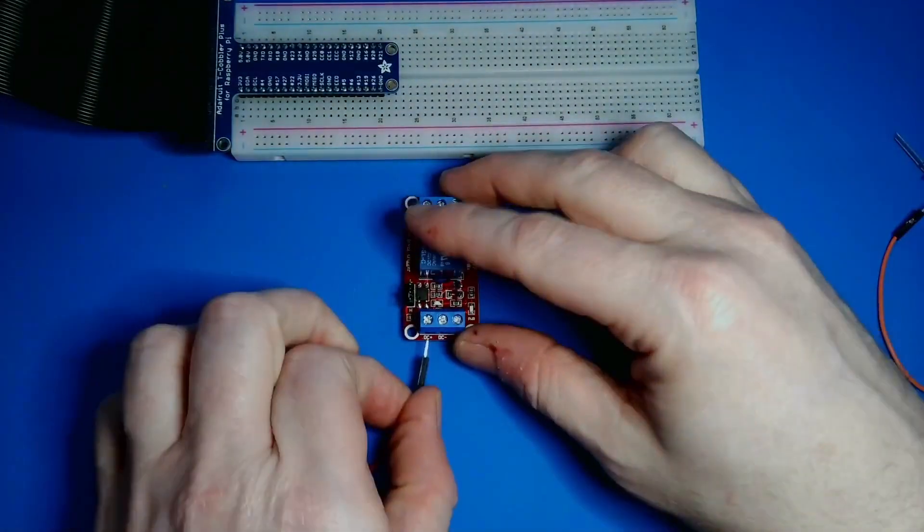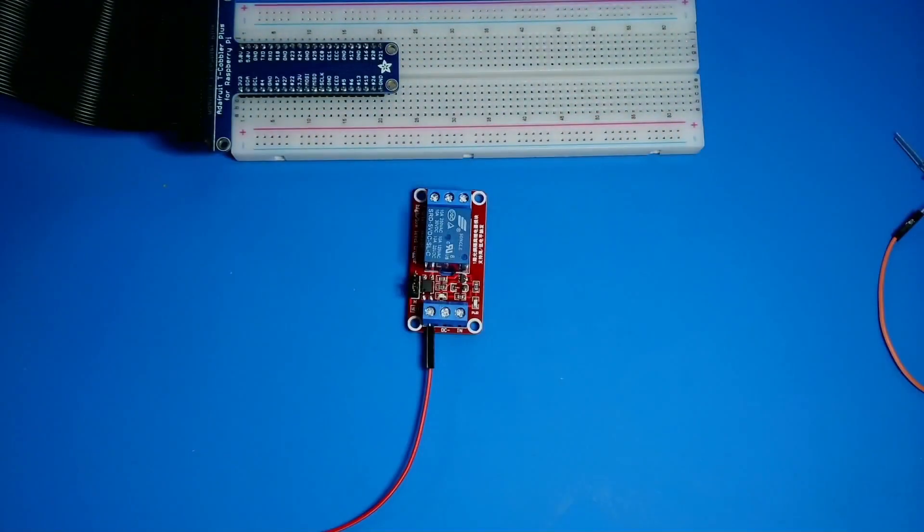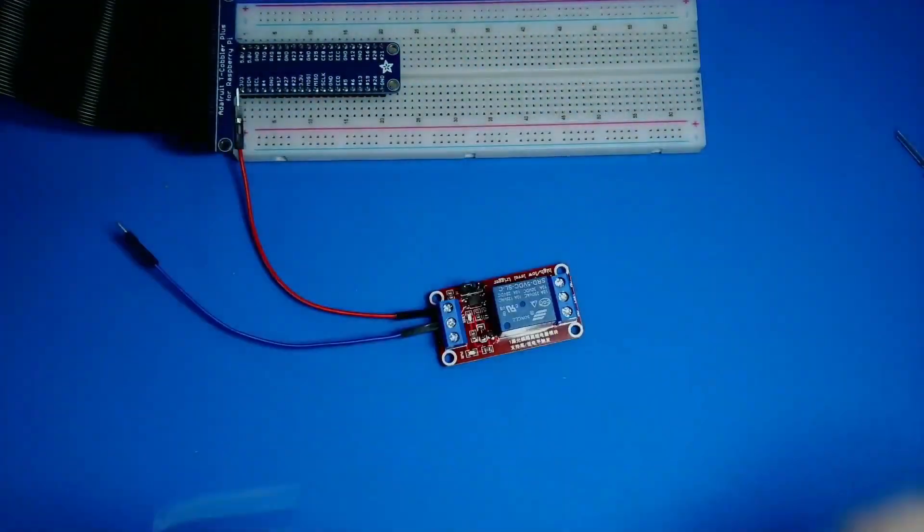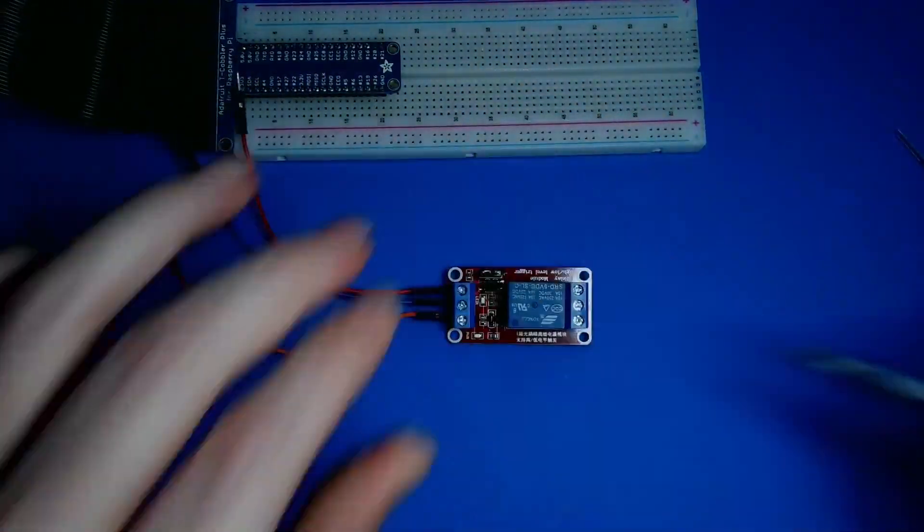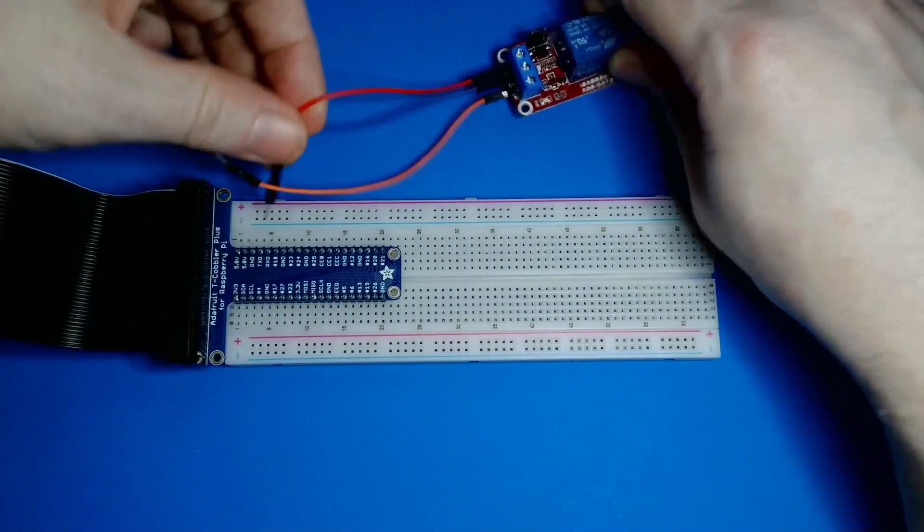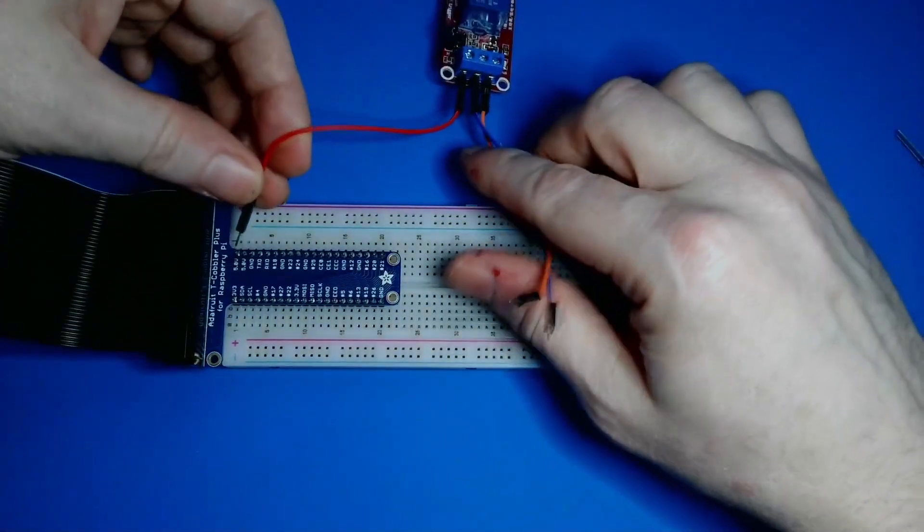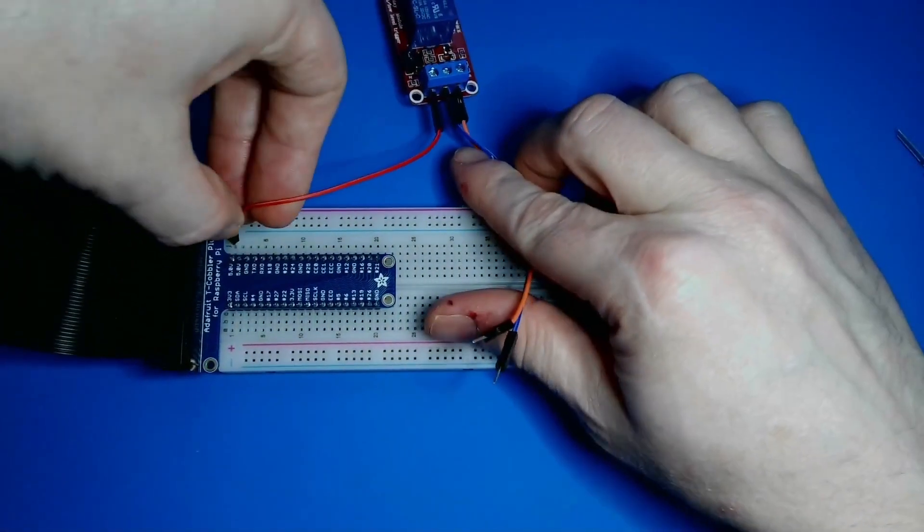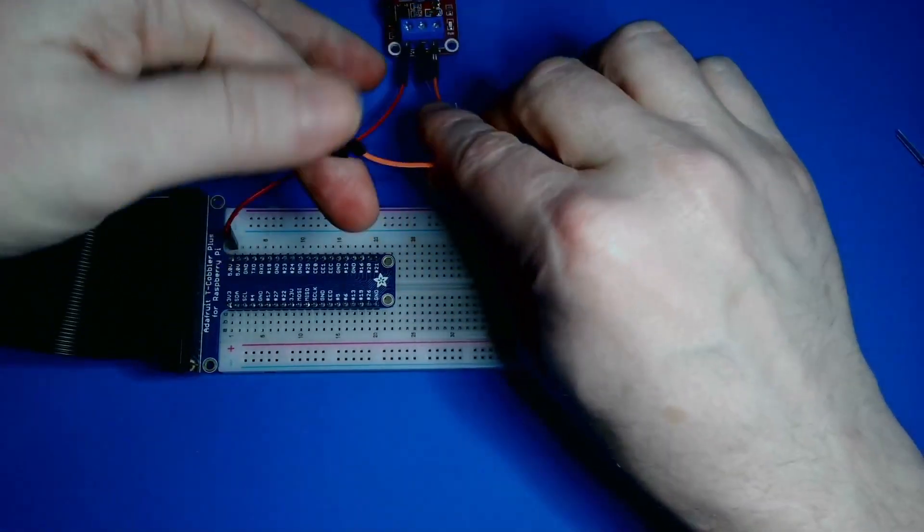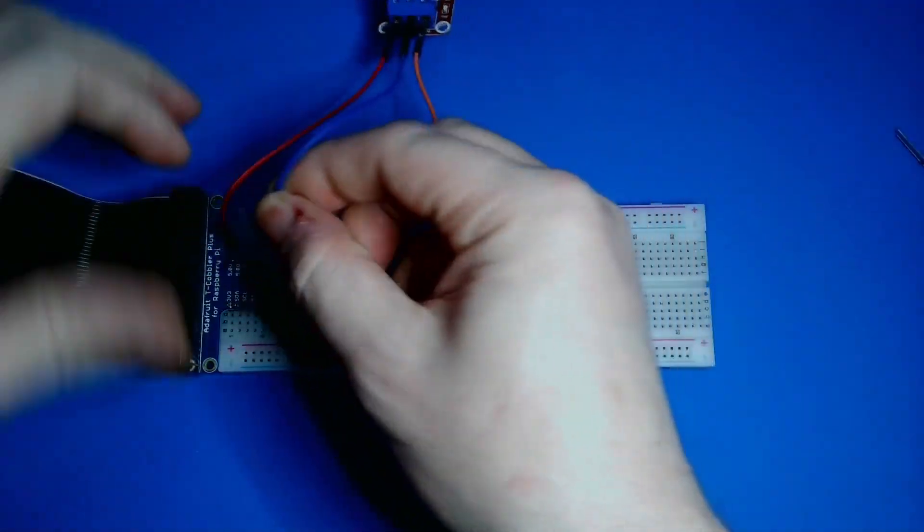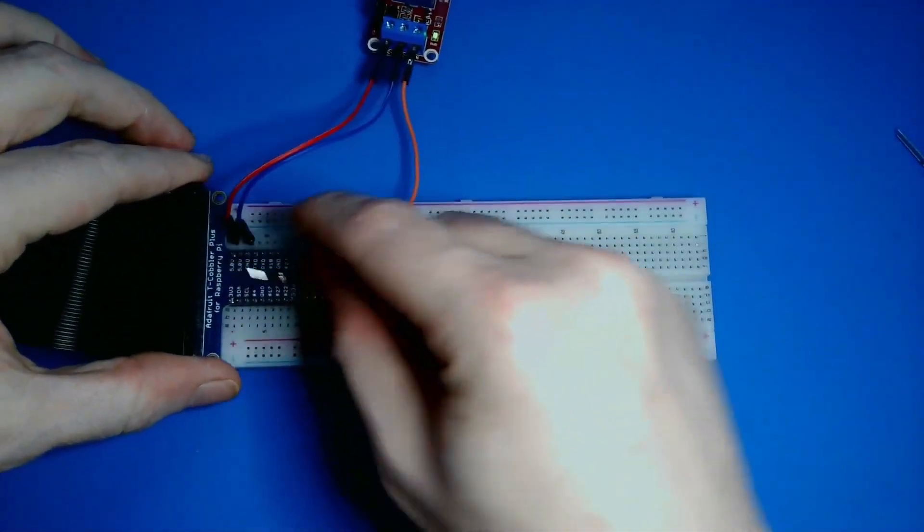To use the relay, I'll first connect jumper wires to the screw terminals on the control end of the relay. I've cleared my breadboard, and now I'll connect the DC positive jumper wire to one of the 5 volt pins on the device, and I'll connect the DC negative jumper wire to one of the ground pins. These connections power the relay.